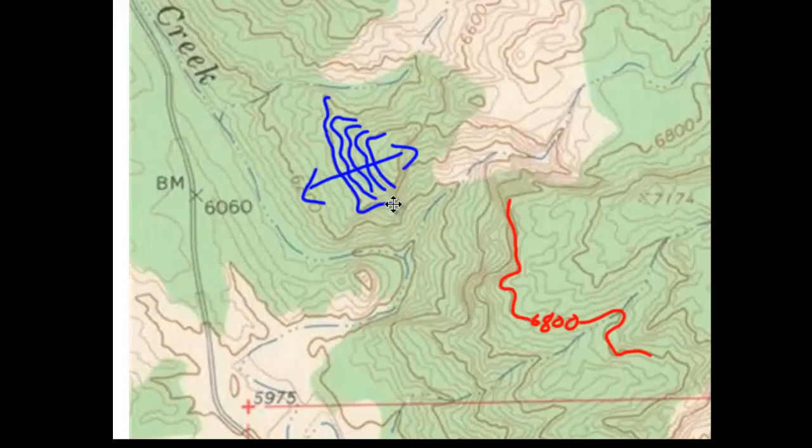The elevation between the lines is always consistent. That's called the contour interval and that can change on any particular map from 5 feet all the way up to 200 feet depending on the specifics of that landscape.